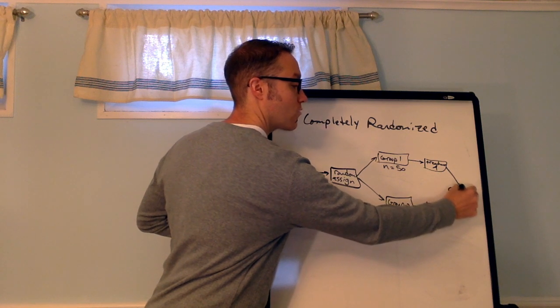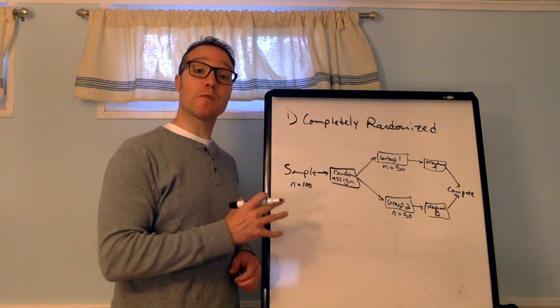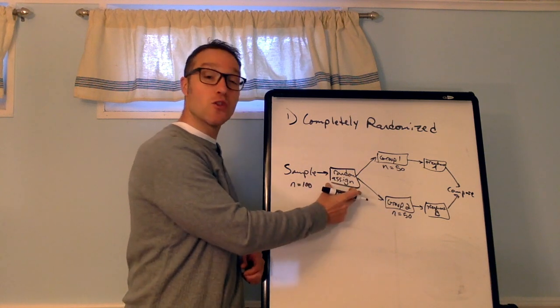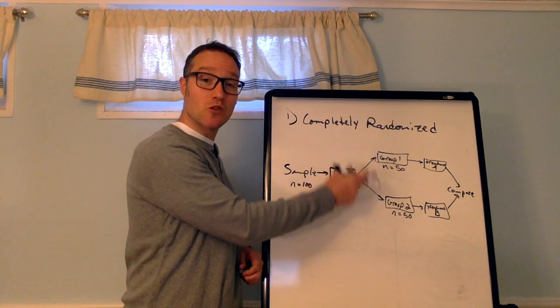So, let's say this is treatment A and treatment B. And then at the very end, you want to compare the results. So, this is what a completely randomized design looks like. You start out with your sample. You use random assignment to put them into two groups. You apply a treatment and then you compare the results at the end.